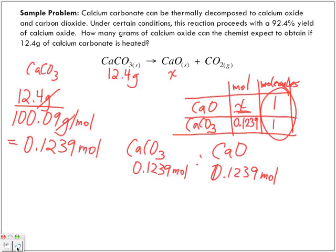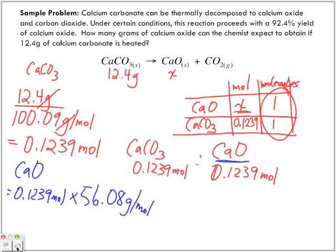The mass of calcium oxide, right? So we want to find the mass of calcium oxide. To do that, we've got to find the molar mass of calcium oxide. So we have 0.1239 moles times the molar mass of calcium oxide, which is 56.08 grams per mole. So moles cancel out, and we're left with 6.948 grams of calcium oxide.